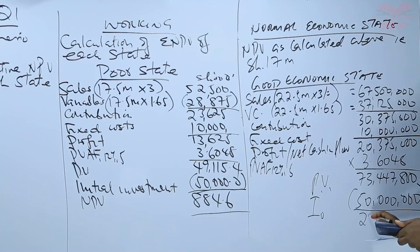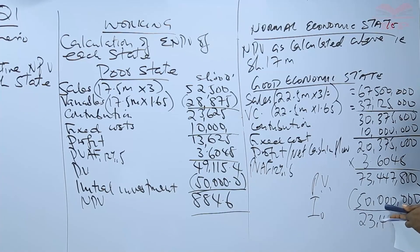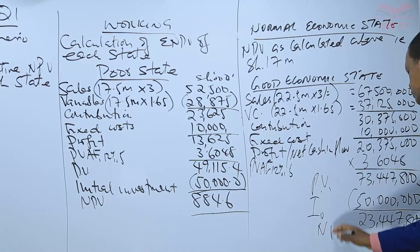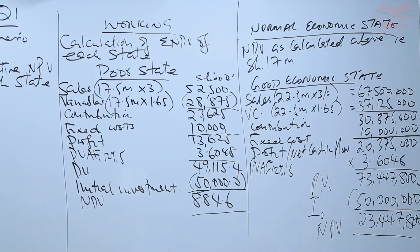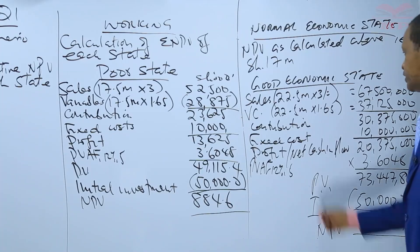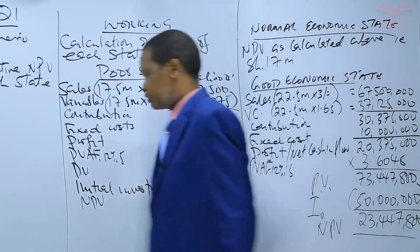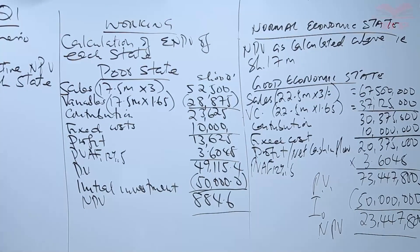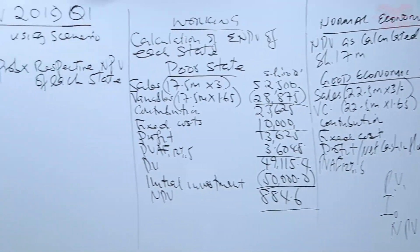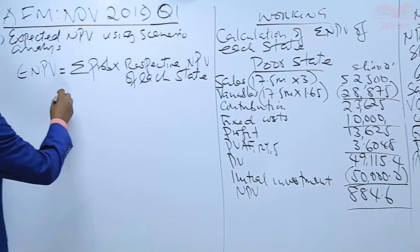Deducting 50 million, the NPV for the good economic state is 23,447,800. Now we have all the inputs needed to calculate the expected NPV using scenario analysis.